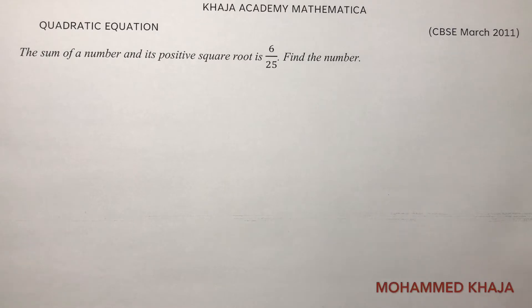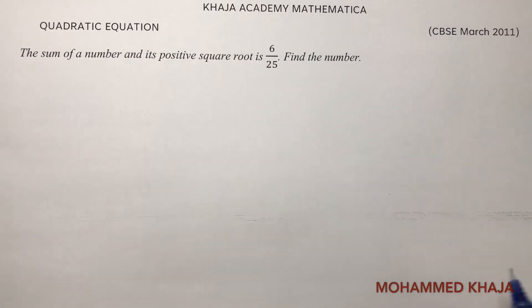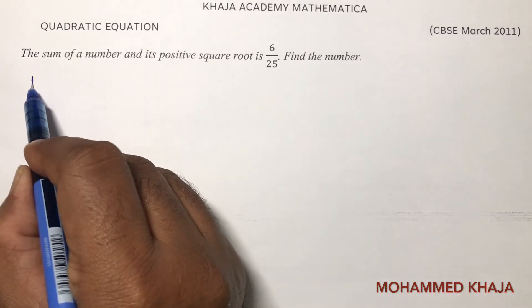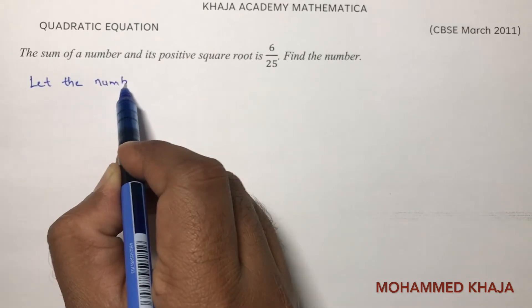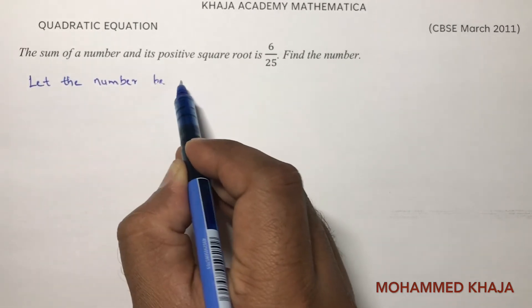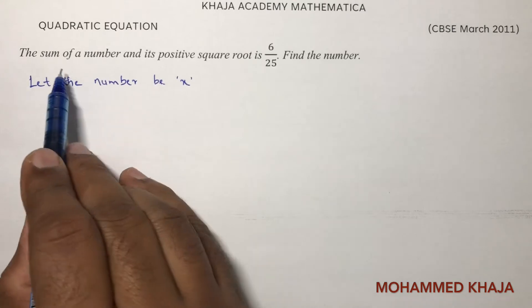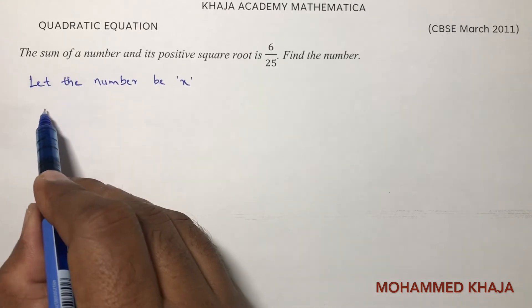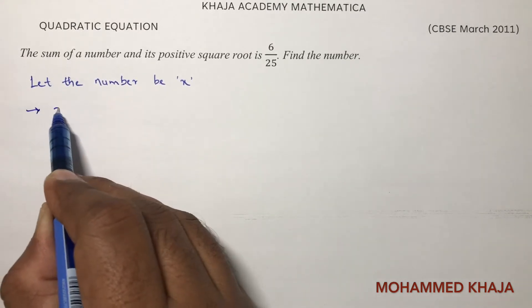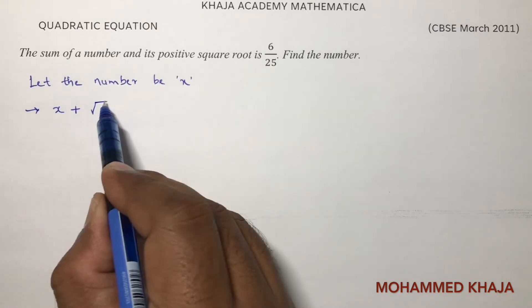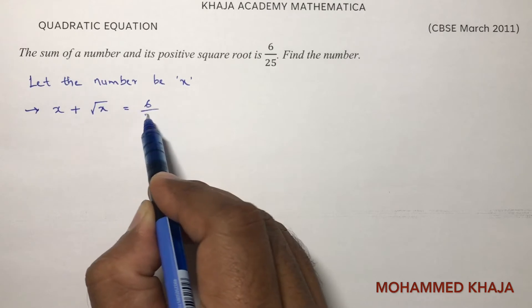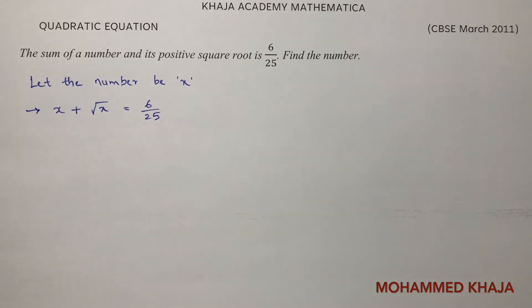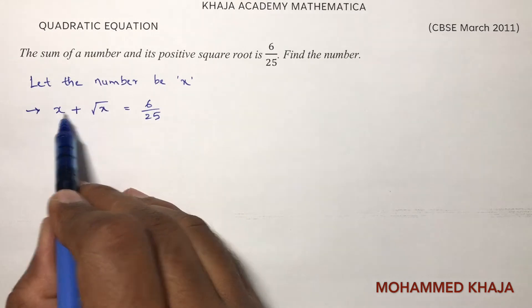The sum of a number and its positive square root is 6/25. Find the number. Let the number be x. According to the given condition, the sum of a number and its positive square root equals 6/25.